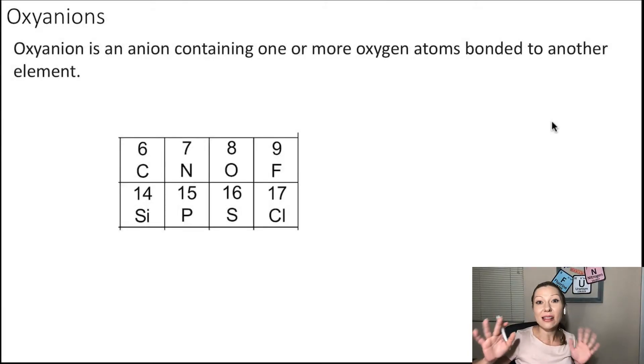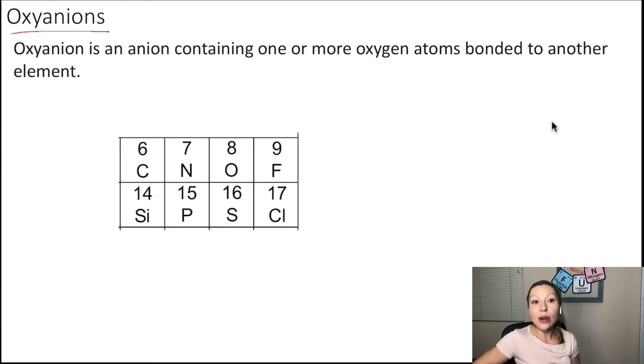Hello guys, let's talk about oxyanions. An oxyanion is a negatively charged ion that contains one or more oxygen atoms bonded to another element.